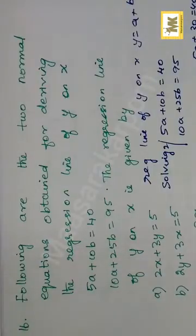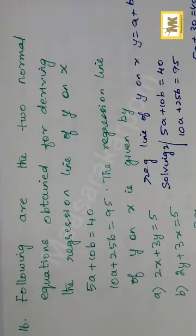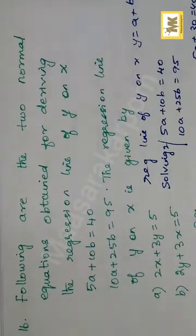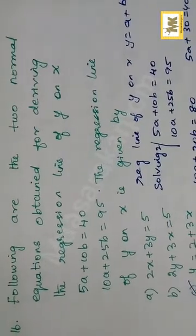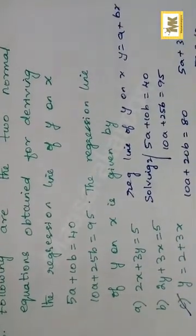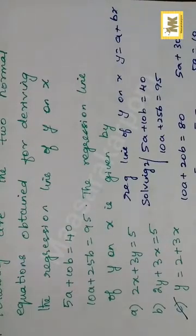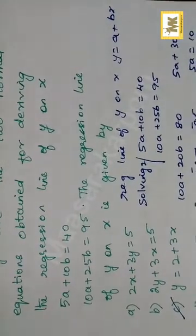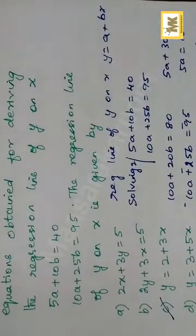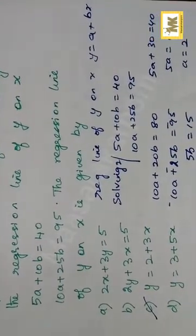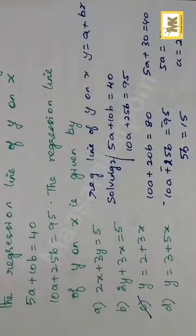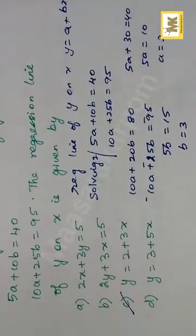Following are the two normal equations obtained for deriving the regression line of y on x: 5a plus 10b is equal to 40, and 10a plus 25b is equal to 95. The regression line of y on x is given by y equal to a plus bx. Solving these two equations for a and b, then substituting, gives y is equal to 2 plus 3x as the required answer.